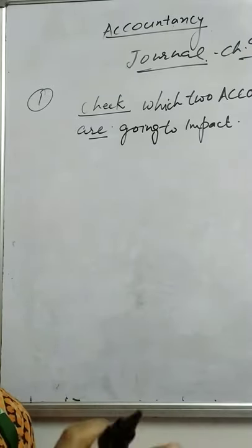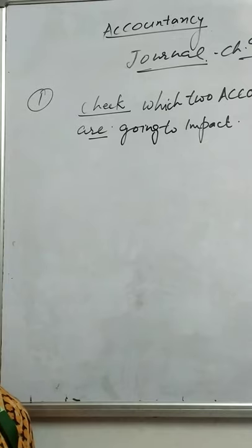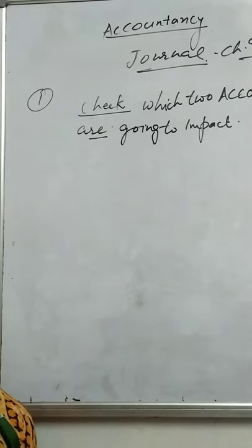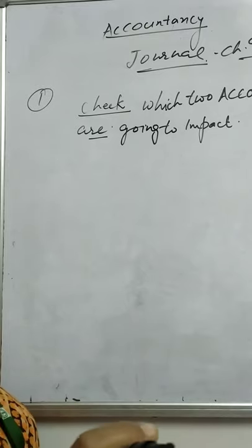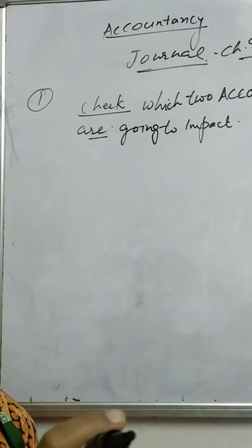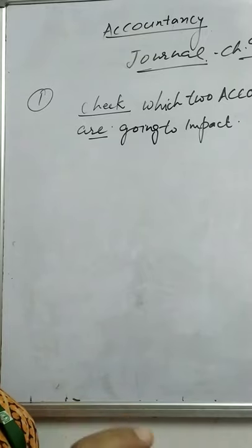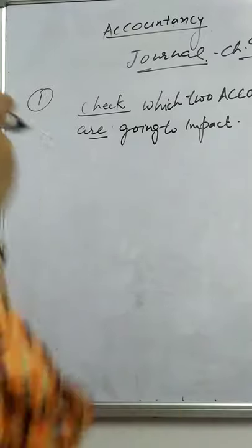There may be two or more than two accounts impacted by one transaction. We have to record all those transactions in the journal. From the journal, all transactions are posted to the ledger — a book in which every account is separately maintained for recording transactions.